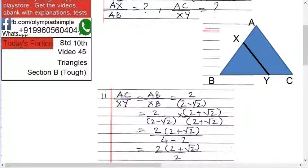Next, what do we want? We want AC upon XY. Okay, AC upon XY. That is equal to what? AB upon XB, right? Because of similarity of triangles, the ratio of the corresponding sides would be equal.